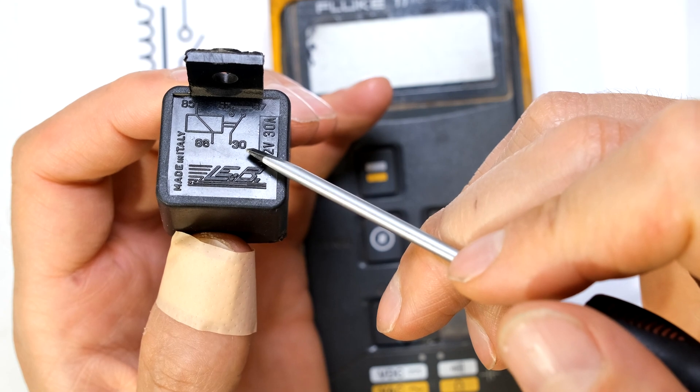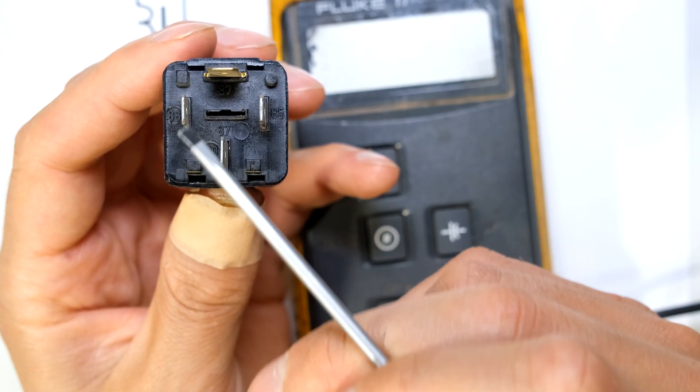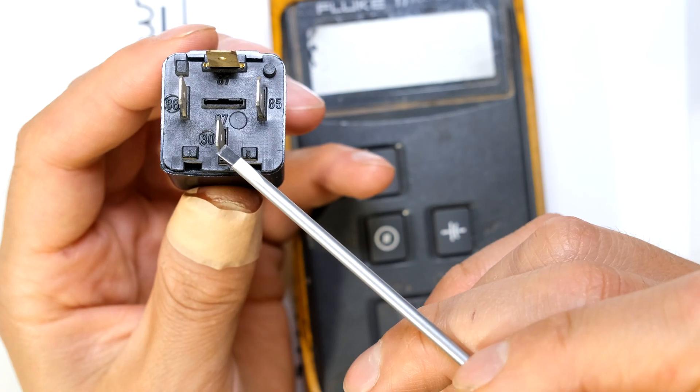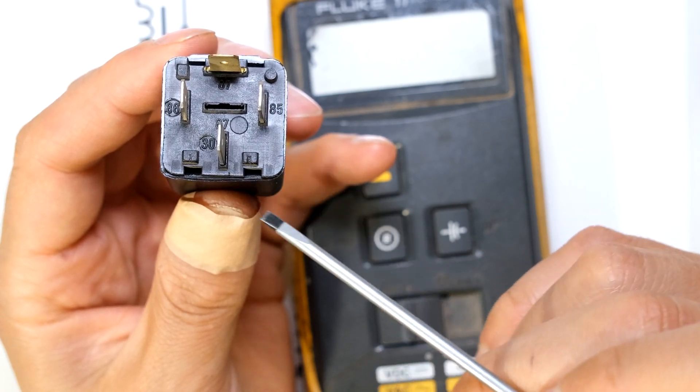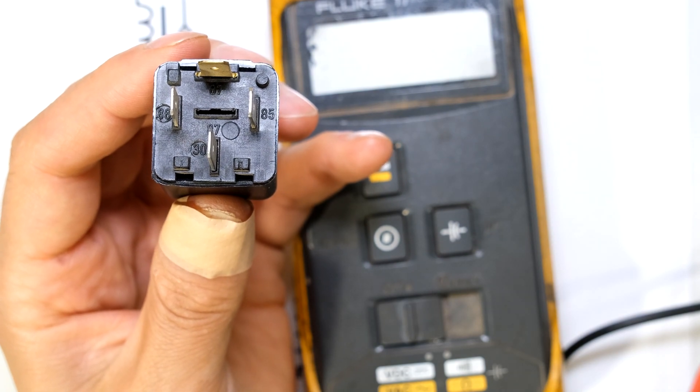On the bottom of the relay you can see I've got 85 and 86, so that is the coil. This is number 30 and that's number 87, that is the contactor. If your relay does not have the numbers, it's not a problem. Now I'm going to show you how to test it.